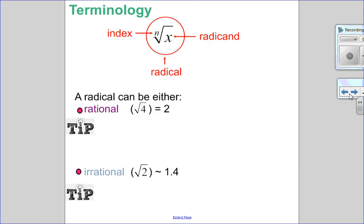Let's talk about radicals and their terminology. This whole thing altogether is a radical, and it's made up of an index — a little small number that tells you what root you're taking. For example, square root has an invisible 2, cube root has a 3, fourth root has a 4, and so on. What's underneath the root symbol is called the radicand. In our last chapter, when we were talking about the quadratic formula, the discriminant — b squared minus 4ac — that would have been our radicand.